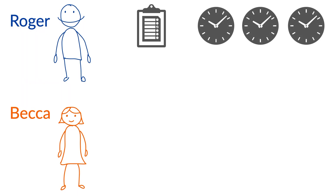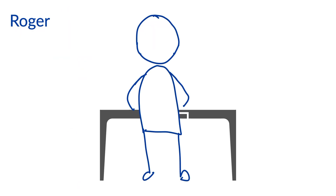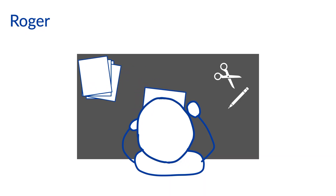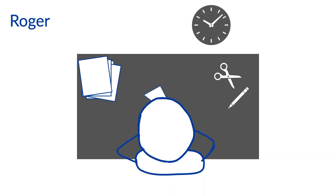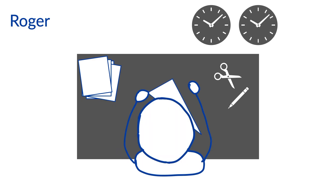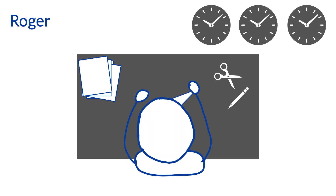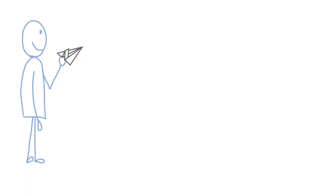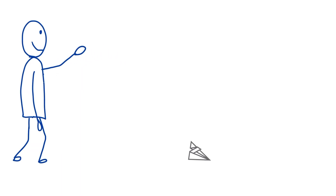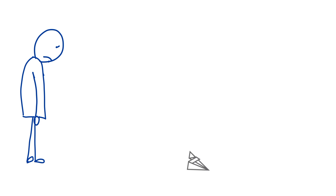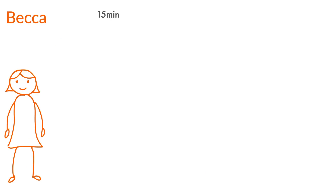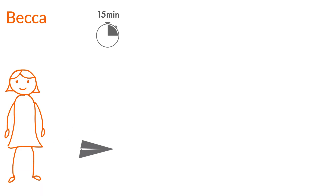After the three hours, Roger created a pretty cool airplane. He made sure to think about all the things that might go wrong in a test and made the appropriate builds to prevent any complications. Since he spent the whole three hours perfecting his airplane, he only had time to test it once at the end. It flew pretty well, but he did identify a few failure points — with no more time to make any adjustments. Becca, however, made an airplane prototype in the first 15 minutes. It didn't look great, but it was ready to be tested. Her first test didn't go too well, but she was able to identify failure points.